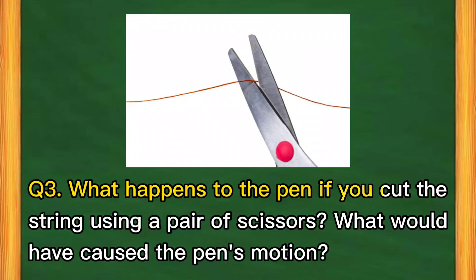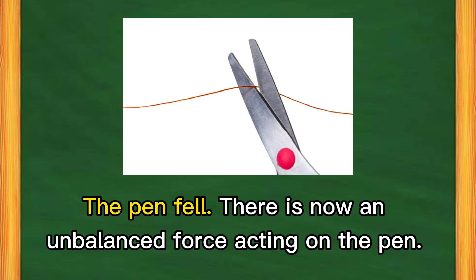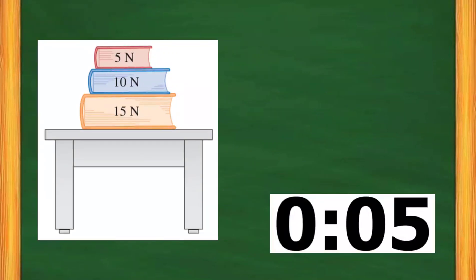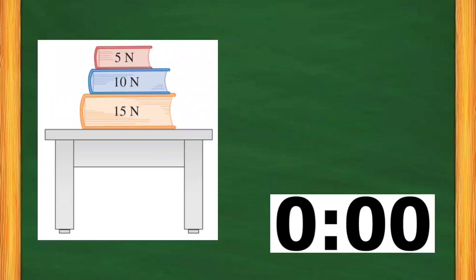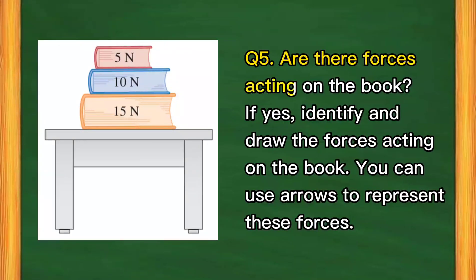What happens to the pen if you cut the string using a pair of scissors? What would have caused the pen's motion? Place a book on top of a table. Is the book at rest or in motion? Are there forces acting on the book? If yes, identify and draw the forces acting on the book. You can use arrows to represent these forces.